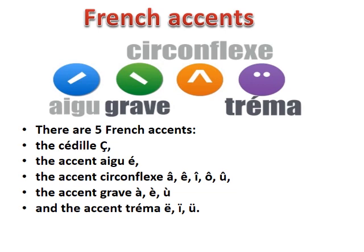The Accent Aigu is found on the letter E. The Accent Circonflexe can come on any vowel — A, E, I, O, U — but there is no change of sound.